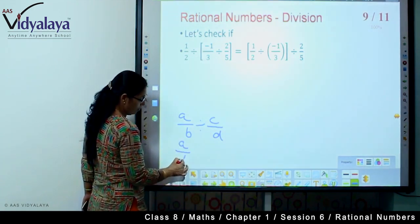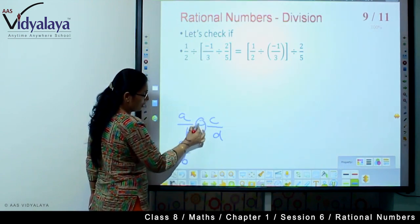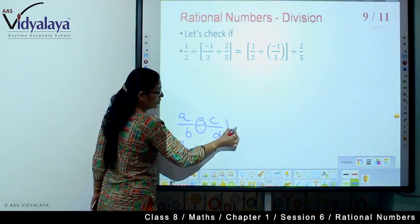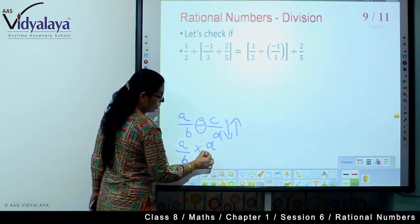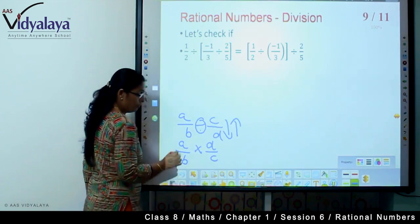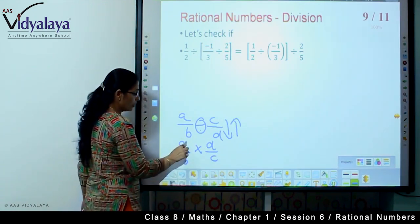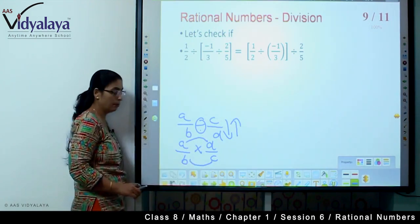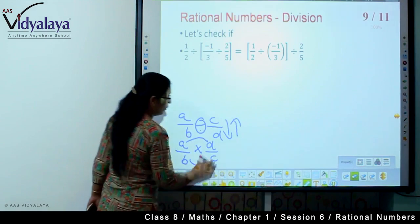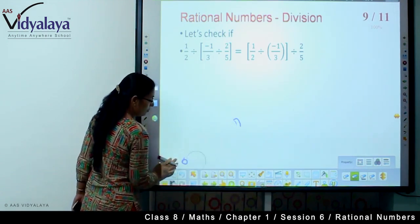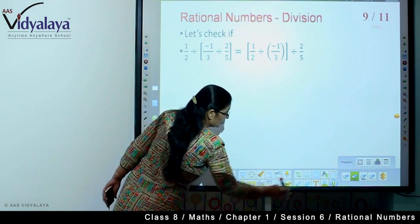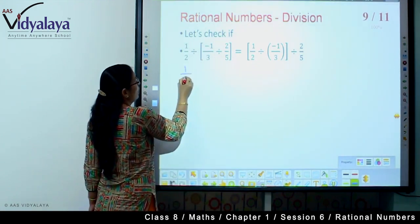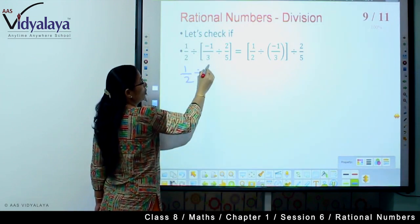What did we learn? Multiplication is associative for rational numbers. We can do A into B into C in a bracket or A into B into C. For division, A upon B divided by C upon D, division place we put multiplication sign and reciprocate. It becomes D upon C, same like multiplication.